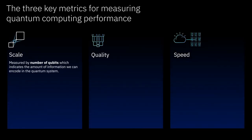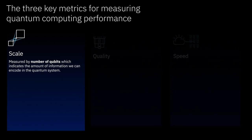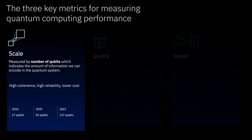Let's look at each in turn. Scale is the number of qubits in our system and it directly determines the size of the problem that we can encode and eventually solve with quantum hardware.